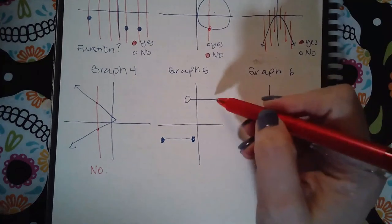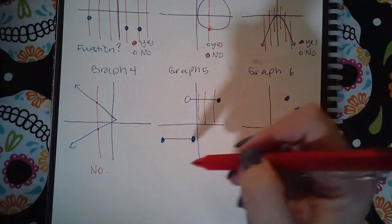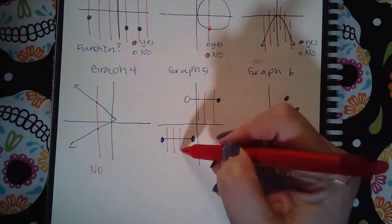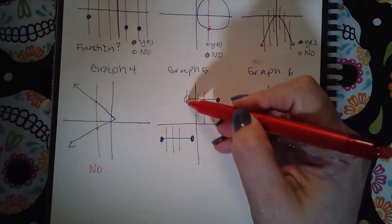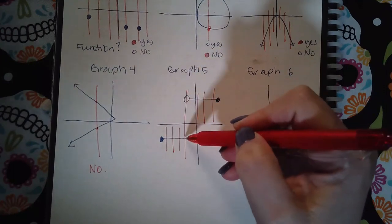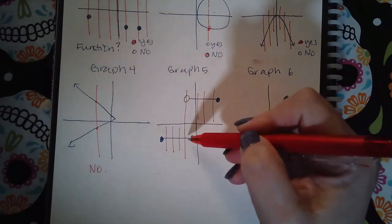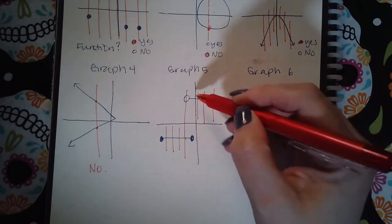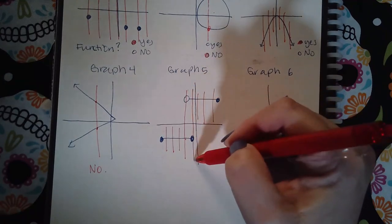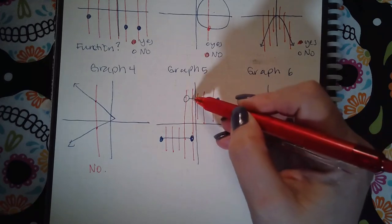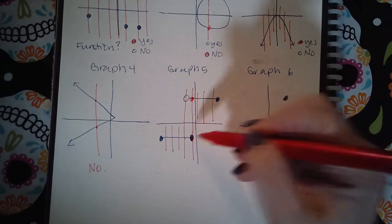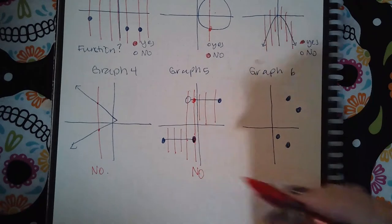Here, if I draw vertical lines over here, I'm good. If I draw vertical lines here, I'm good. If I happen to draw a vertical line here, I'm still good because there's a hole there. So it only touches the graph once. However, if I draw a vertical line here, then I am touching the graph twice. So this one right here is what makes this no, not a function.